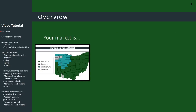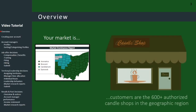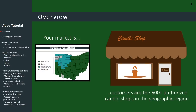Here's a map of your market — we'll call it Cantopia. Your customers in this market are the candle shops throughout this geographic region that are authorized to sell this product. There are over 600 candle shops spread out throughout the 88 counties of Cantopia.